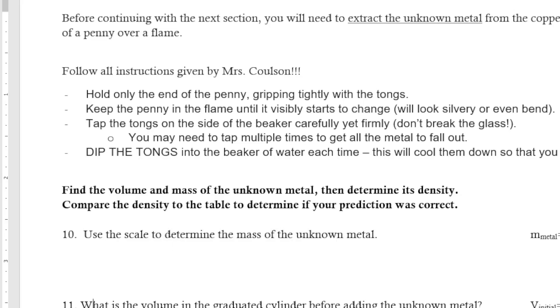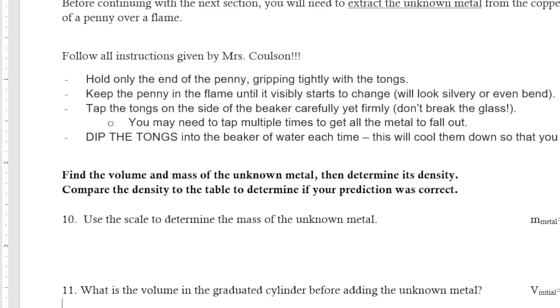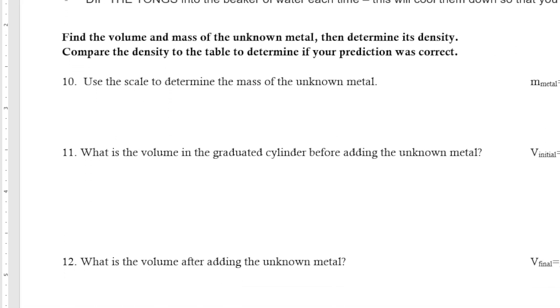The volume in the graduated cylinder before we added the unknown metal—our initial volume—was 52.4 milliliters. After adding the amount of unknown metal that we were able to obtain, it was 54.1 milliliters. That was the volume after adding the unknown metal for number 12. So again, number 11 was 52.4, number 12 was 54.1.